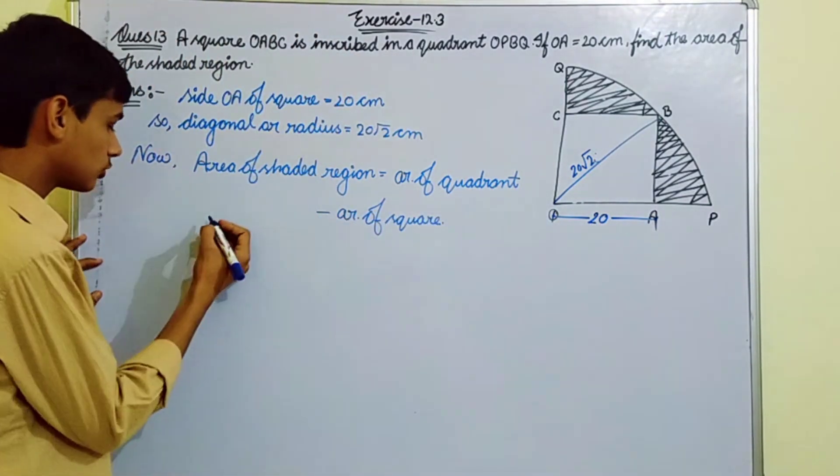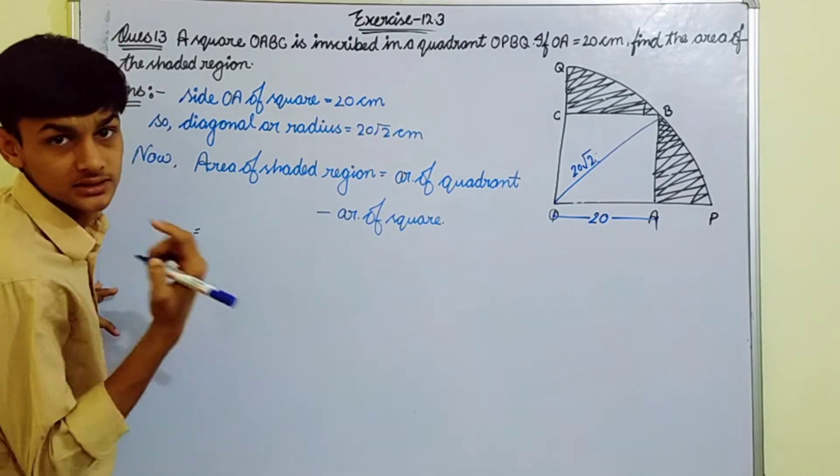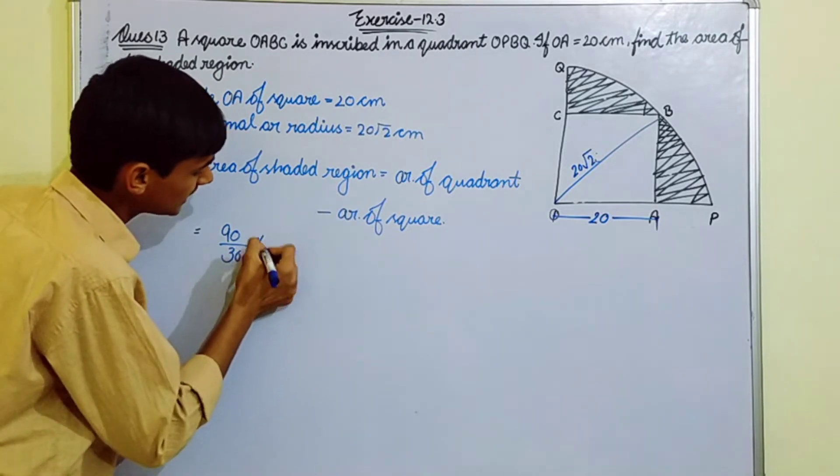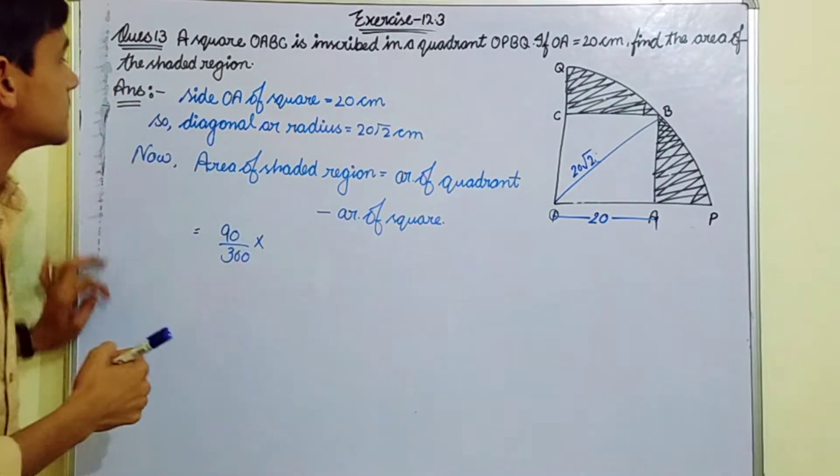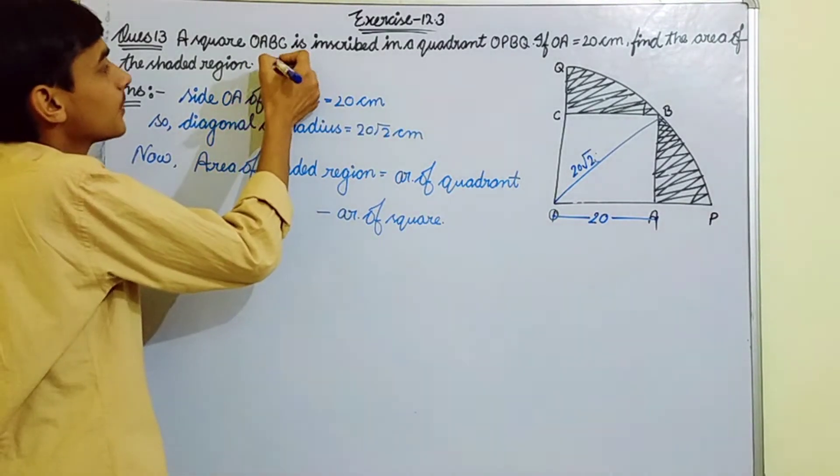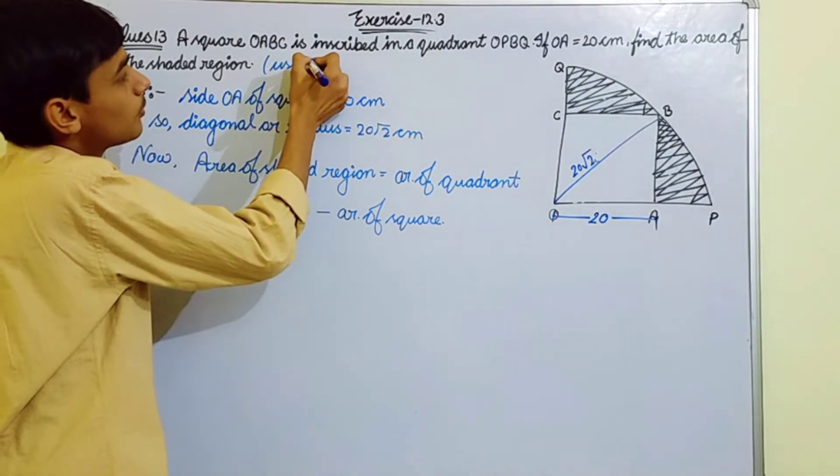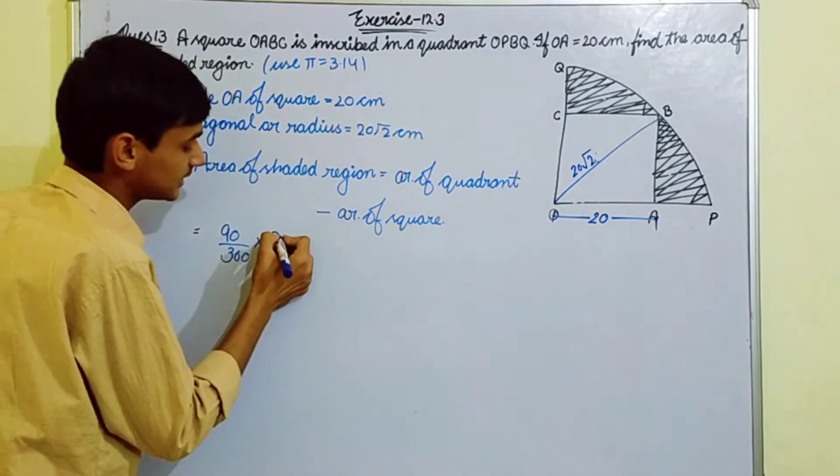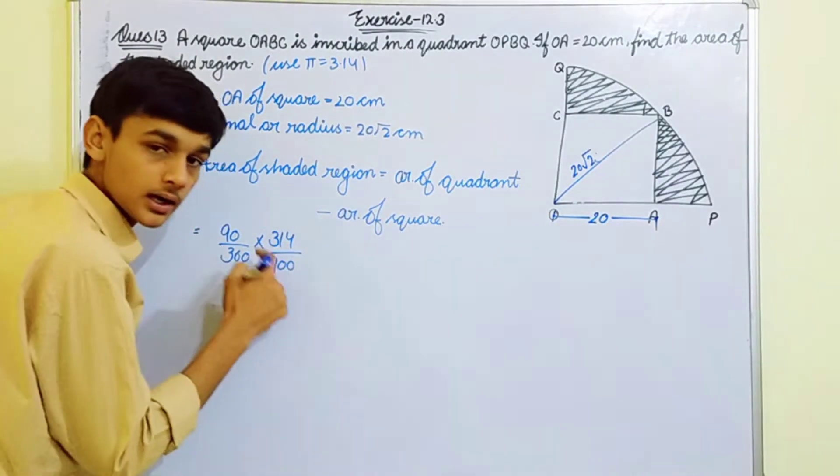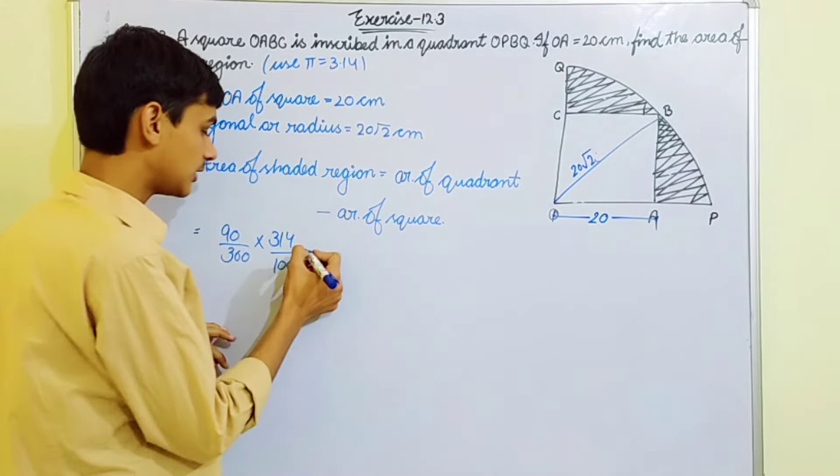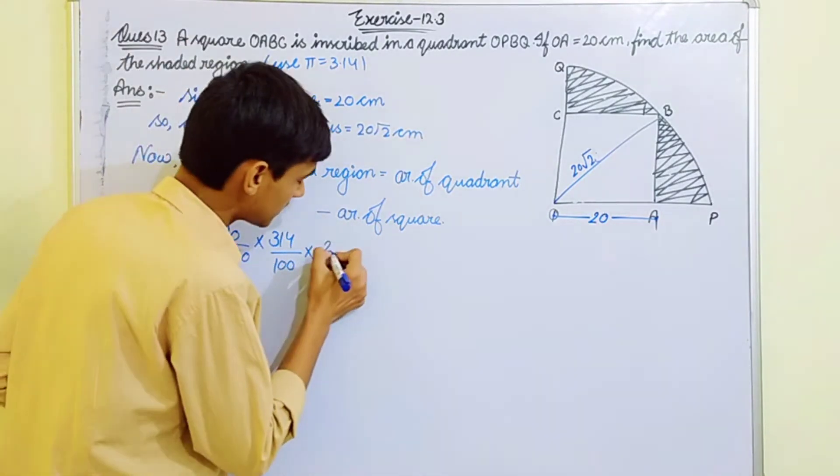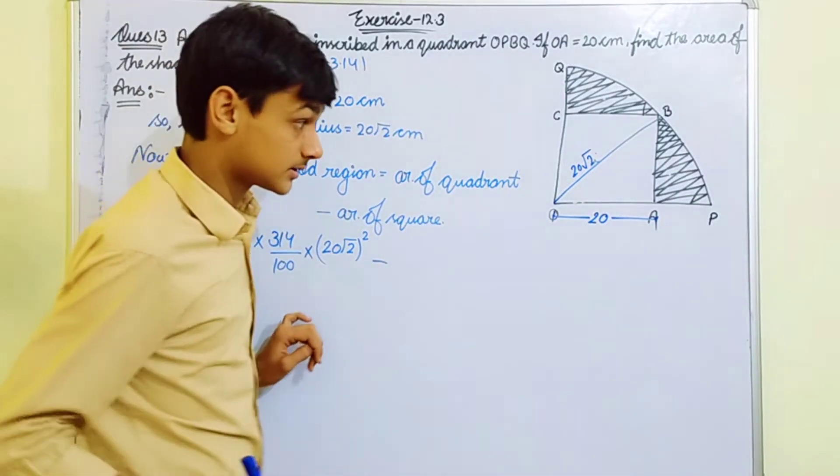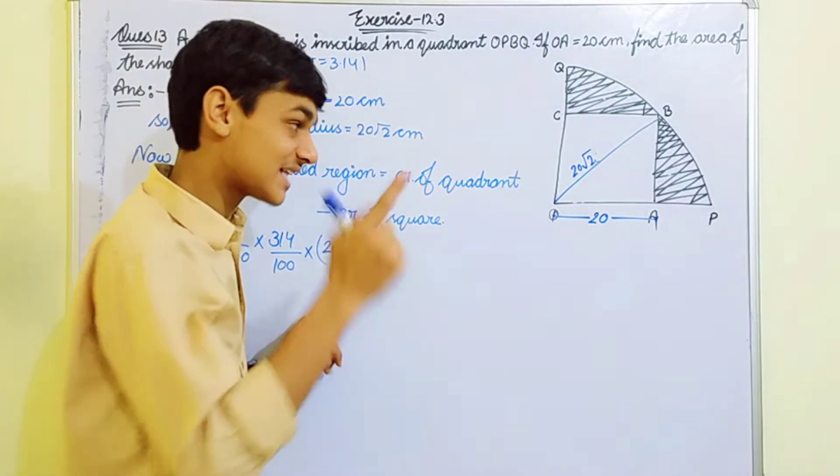Quadrant area is equal to... sorry guys, my bad. 3.14 over 100, that's the decimal point with two zeros, into r squared. r is 20 root 2 squared, minus square's area, which is side squared, 20 squared.